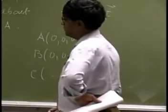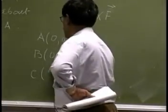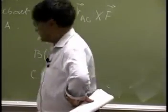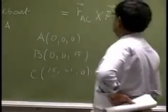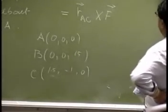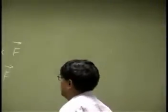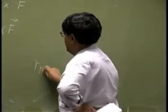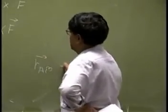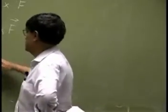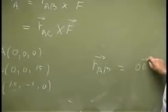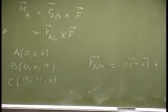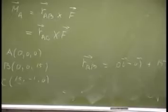C should be 1.5 for the X part, negative 1 for the Y, and 0 for Z, which means that the position vector RAB - that is this minus this - is 0I, 0J, and 15K.